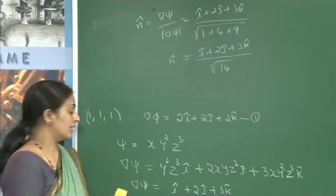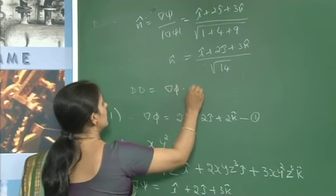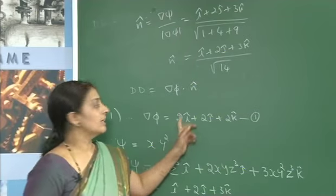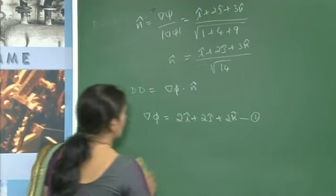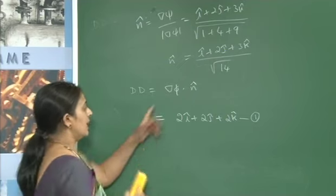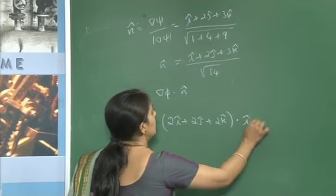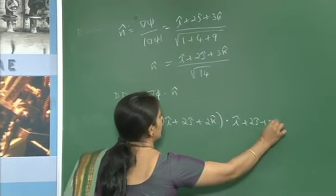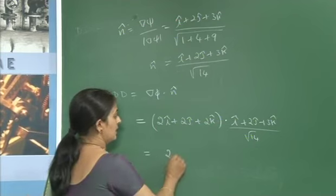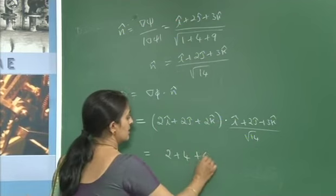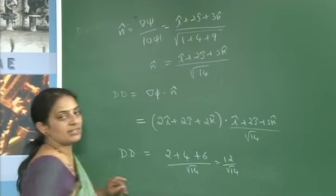Now the directional derivative = grad φ · n̂ = (2i + 2j + 2k) · (i + 2j + 3k)/√14 = (2·1 + 2·2 + 2·3)/√14 = (2 + 4 + 6)/√14 = 12/√14. So the directional derivative is 12/√14.